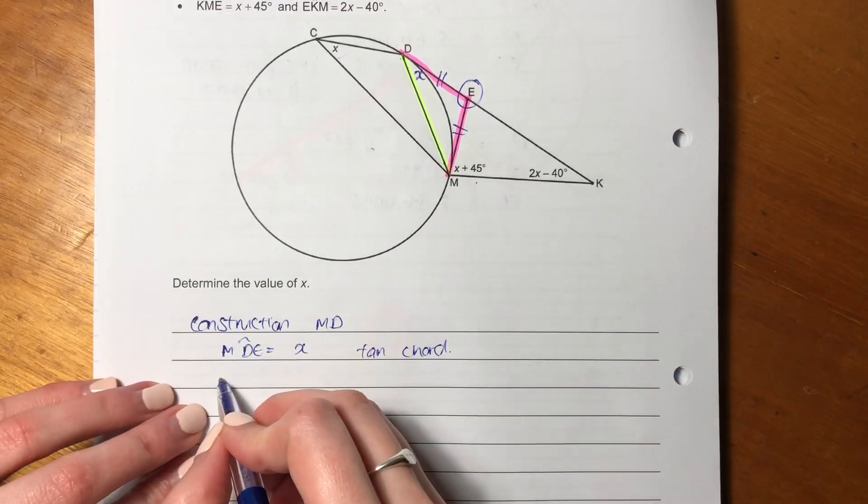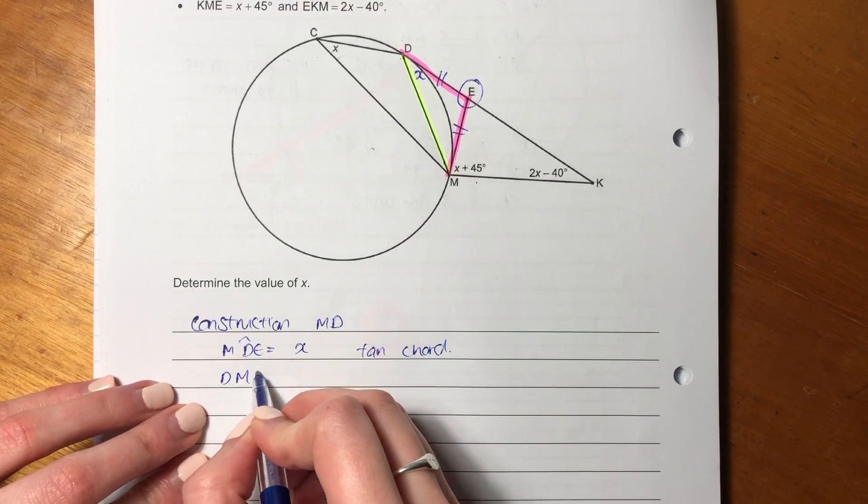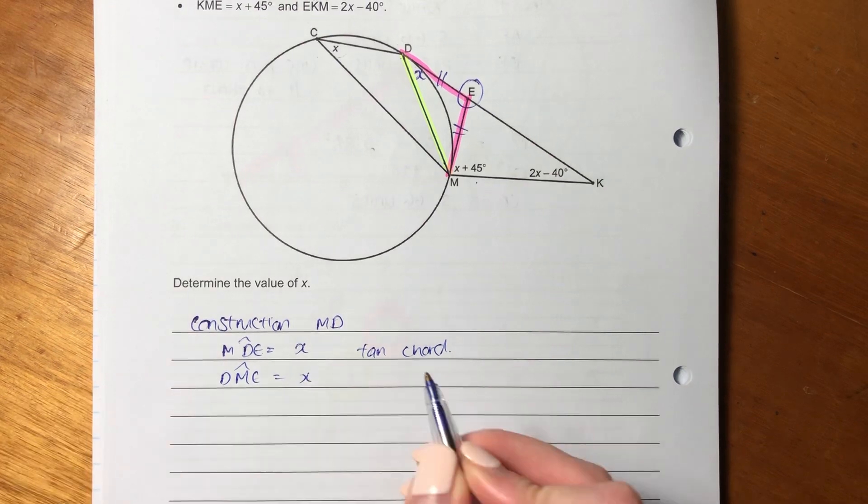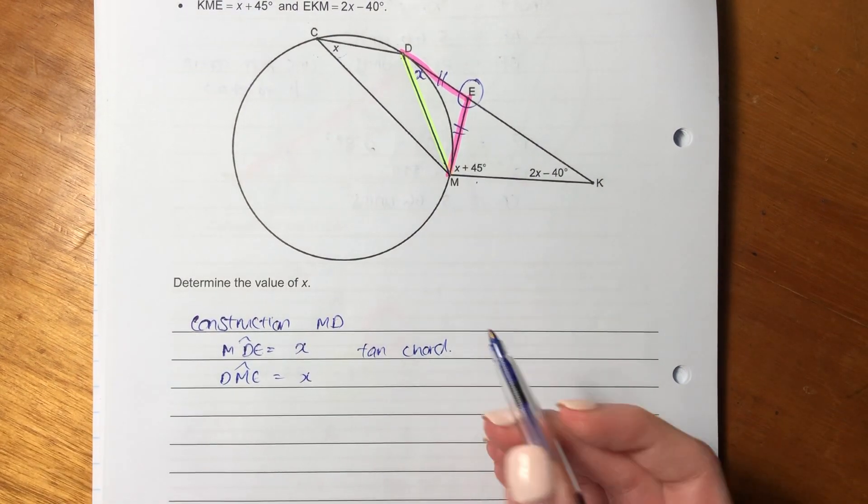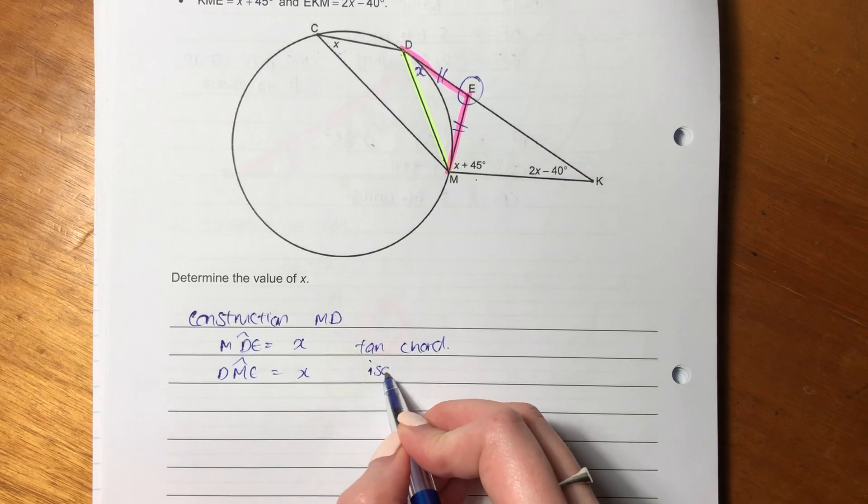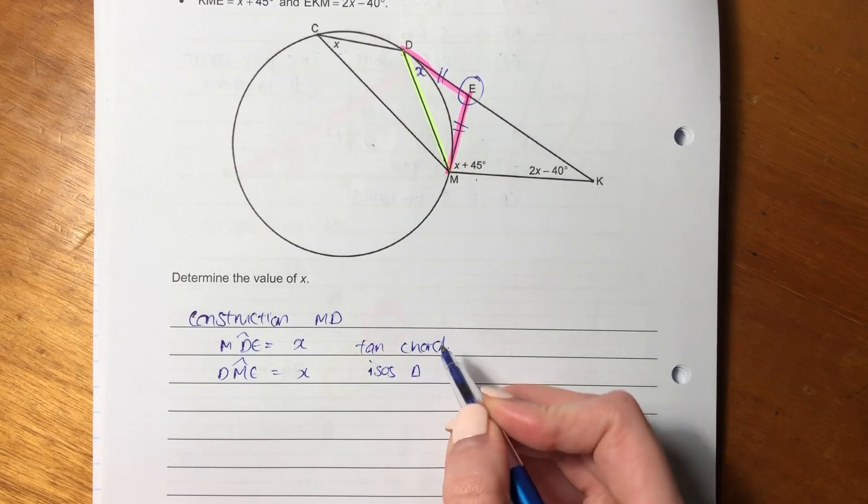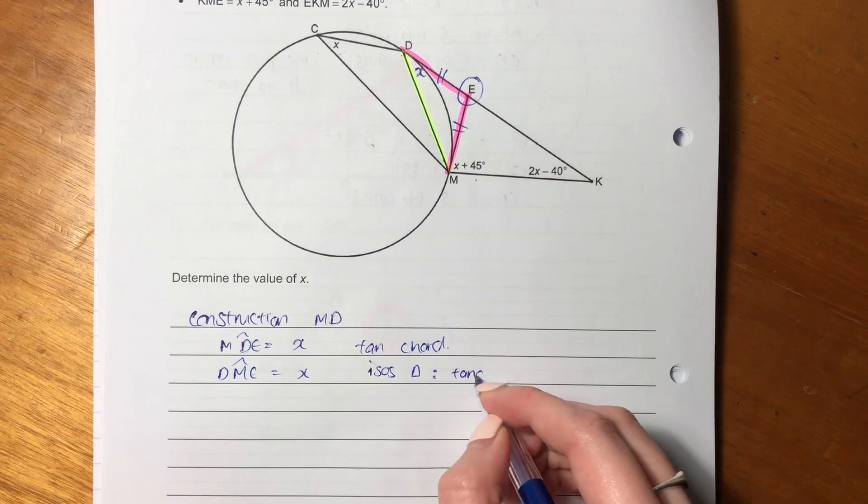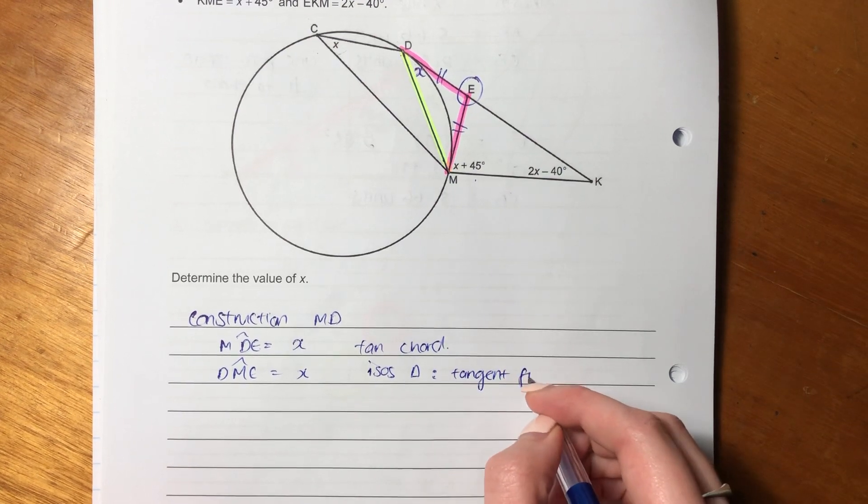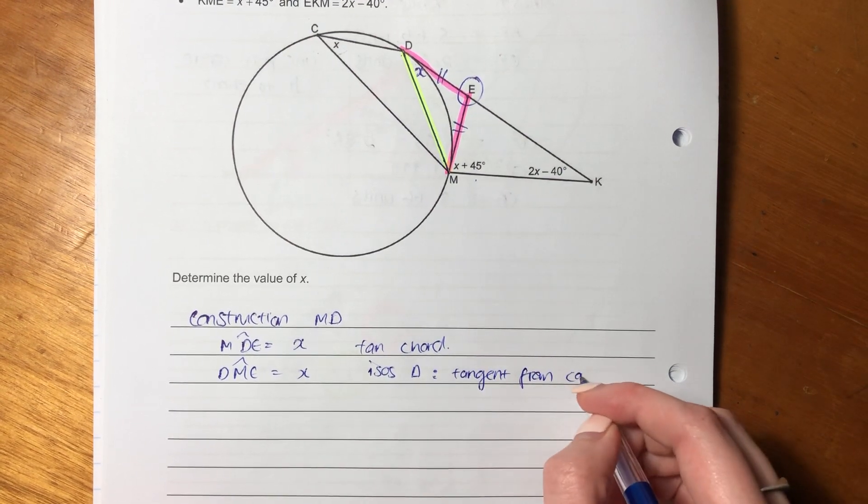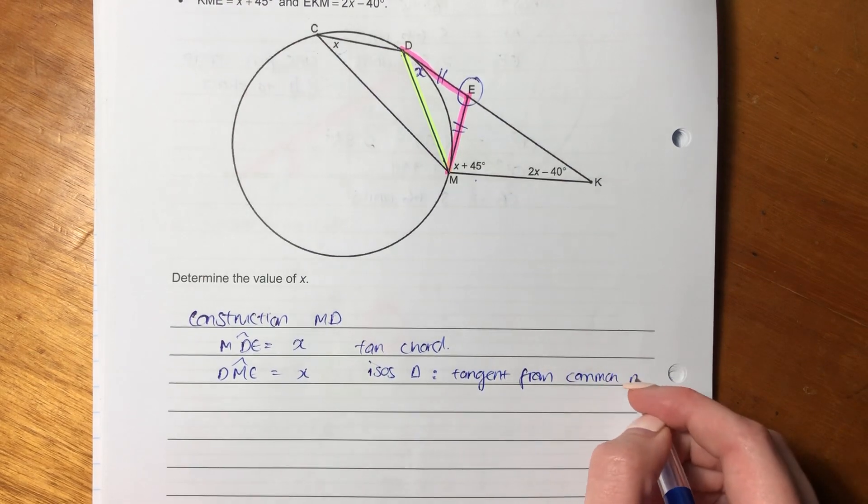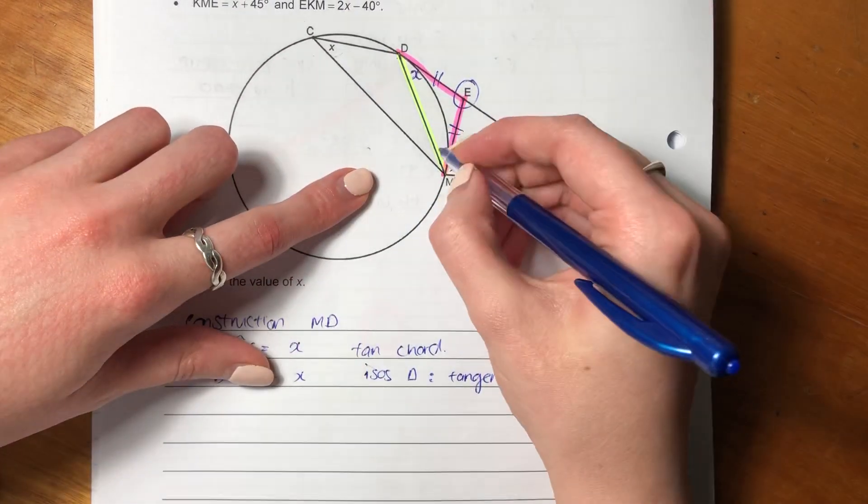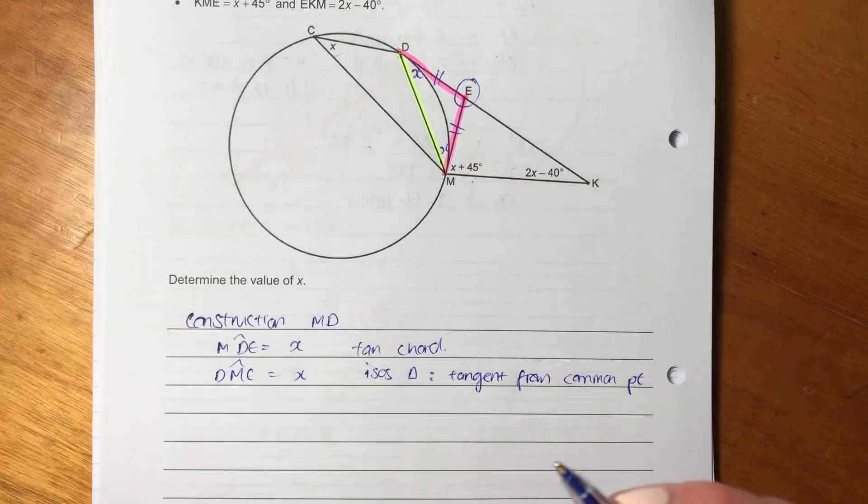But now we know that DME also equals X because of isosceles. You could say isosceles triangle, and those are enabled by tangent from common point. I told you those two things equal, so this has to equal X because it's isosceles.